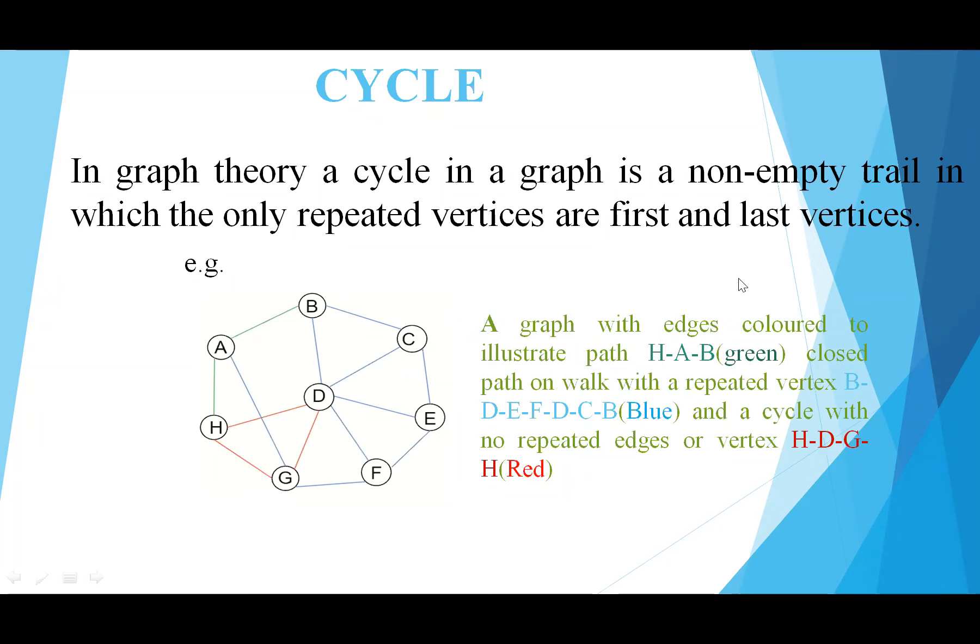For example, in the given figure, HFB colored in green is a path. DDEF, DCB colored in blue are closed paths or walks. HDGF colored in red is a cycle with no repeated edge or vertex.